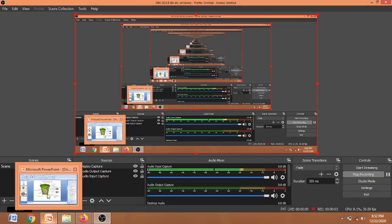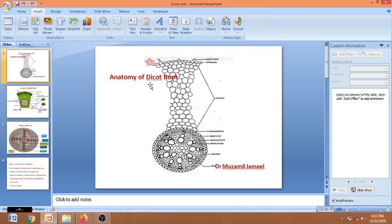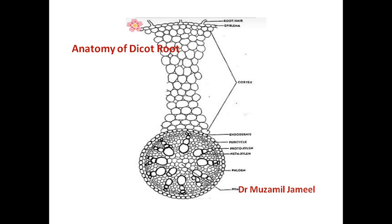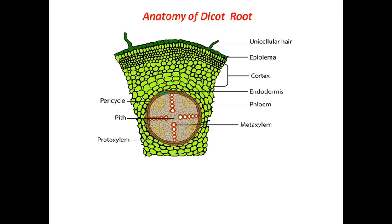We are studying the anatomy of angiosperms, specifically the anatomy of a dicot root. If we cut a cross-section of a root, we find these structures. First of all, there is an epidermis in the root, and the epidermis of the root is also called epiblema. It has several unicellular hairs on it.